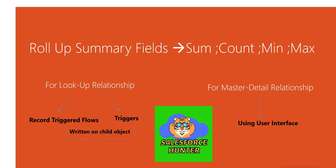Both of them are written on the child object — keep that in mind. We will look into both of them, but because of the time constraint we will be dividing this into two videos. In the first we will be discussing about record triggered flows — that would be this video. And in the next we will talk about how we do it using triggers.